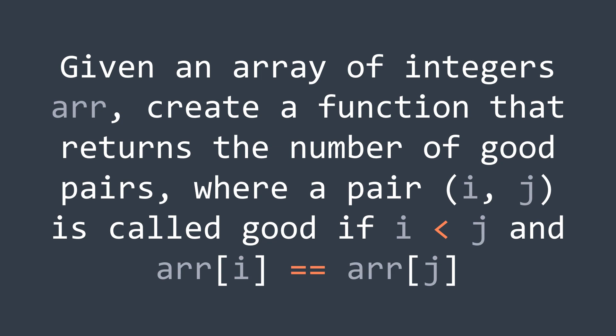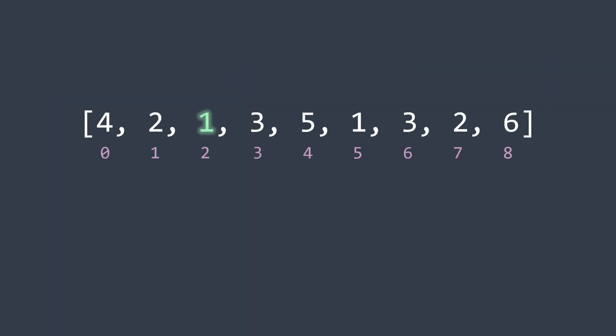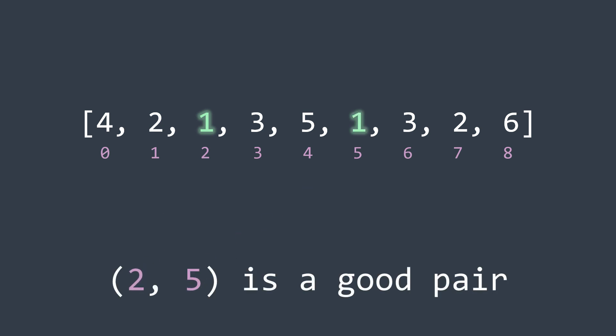In other words, if we find an element that has a certain value, then we find that value again at a further index, then we found a good pair. i is smaller than j means that the index of the first element of the pair comes before the second one in R.